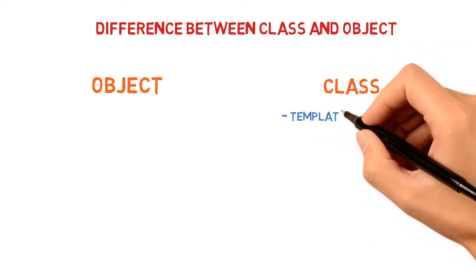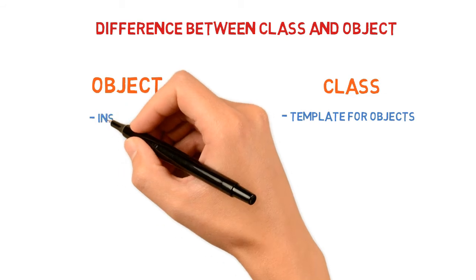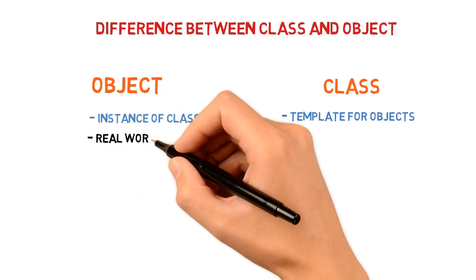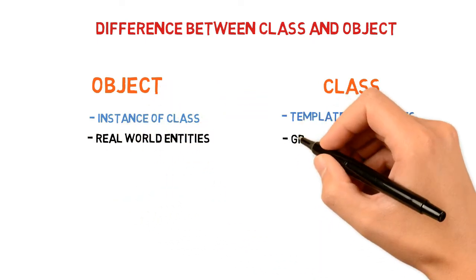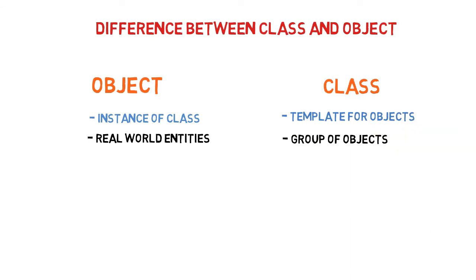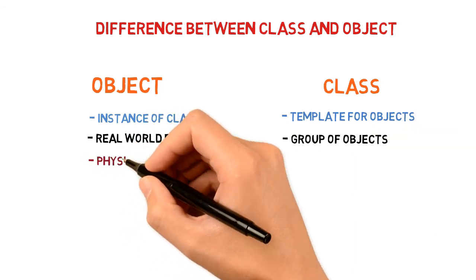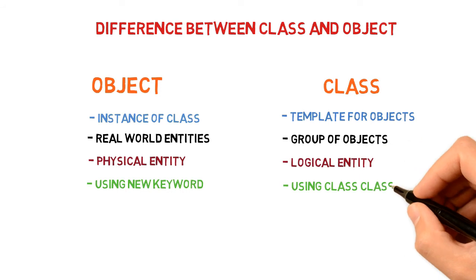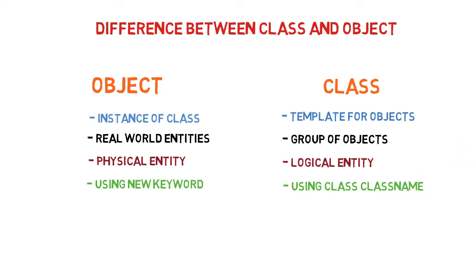The first difference is that a class is a template and an object is an instance of a class. The second difference is that an object is a real-world entity and a class is a group of objects — we create different objects from that class. Objects are physical entities, while a class is more of a logical entity because it's just a template referred to when creating objects. Also, an object is created using the new keyword and a class is declared with the keyword class. Let's see in an actual program how classes and objects are created in Java.